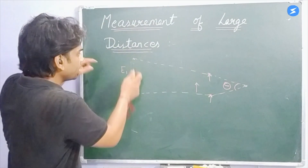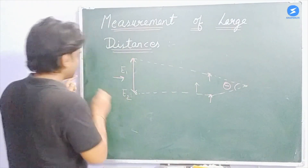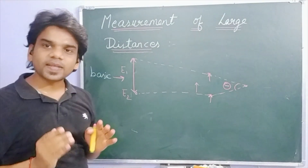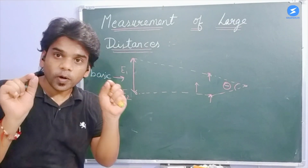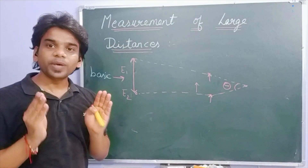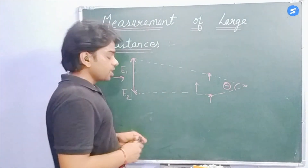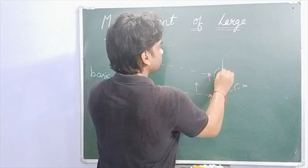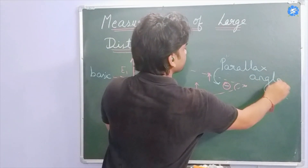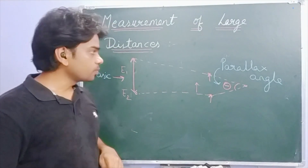If we connect both observation points, the line connecting both points which is subtended by our eyes — this is our basis. The two points of observation have a separation distance which is the basis. In this case, the separation between the two eyes is the basis. The angle formed is called the parallax angle.